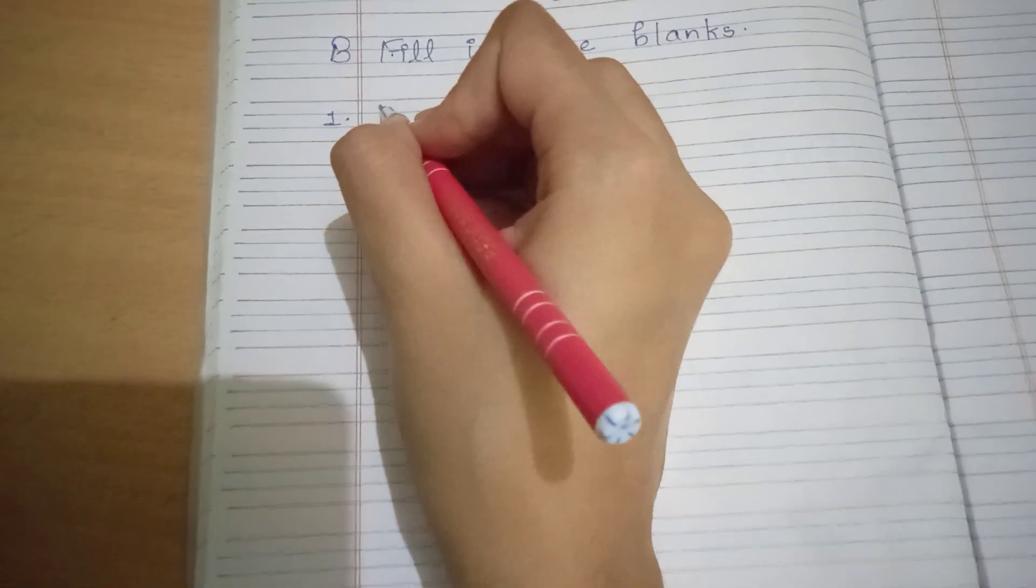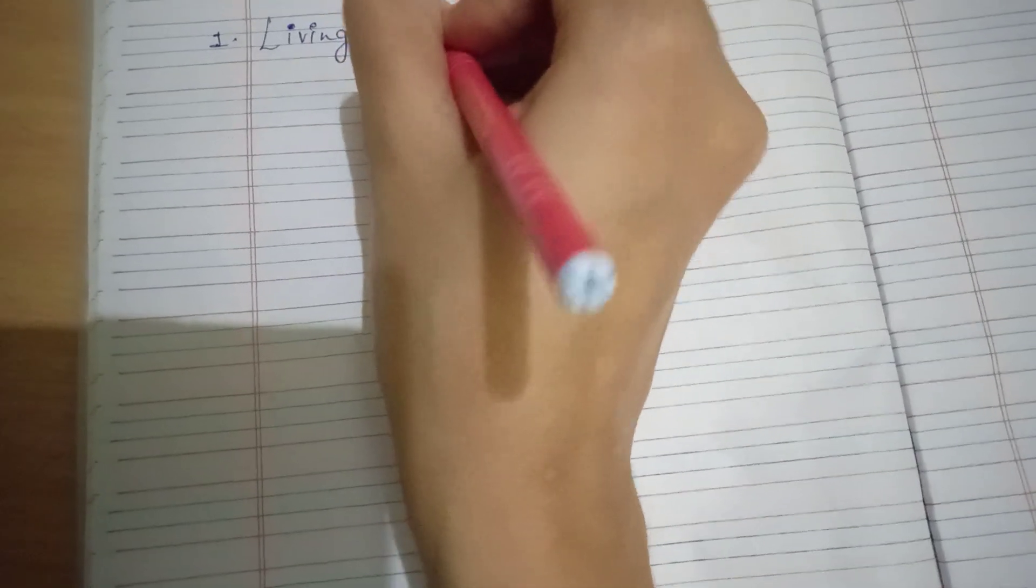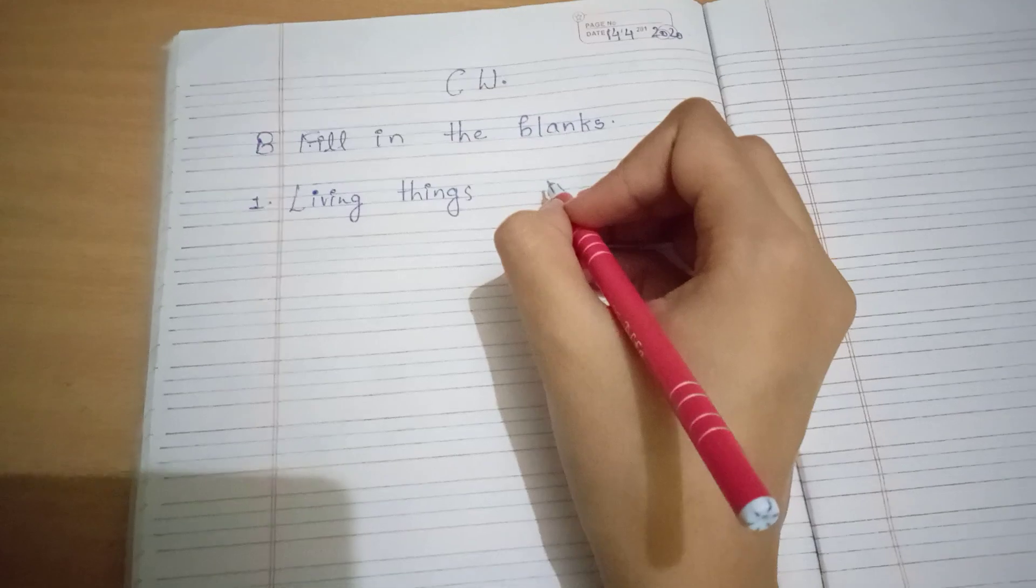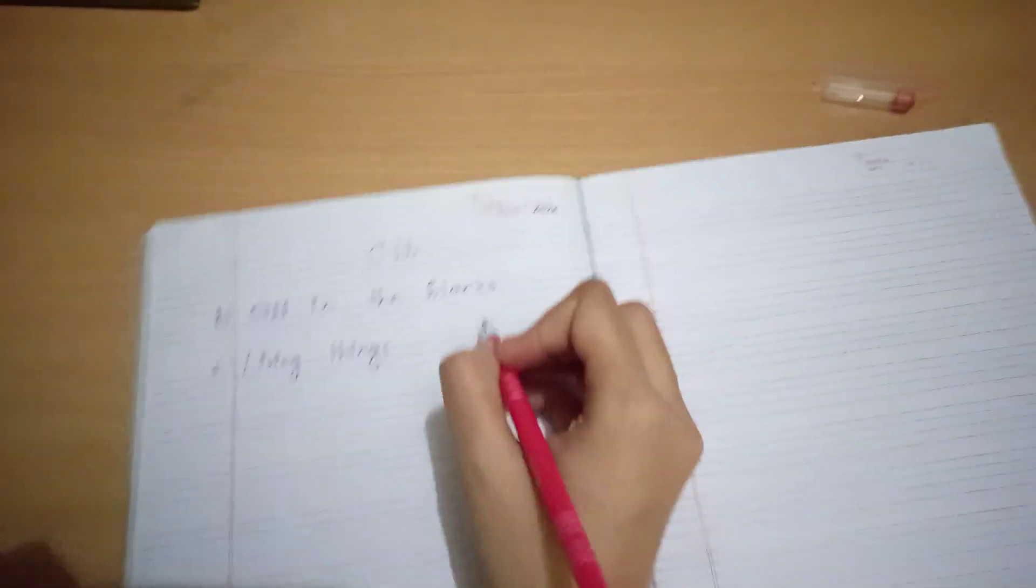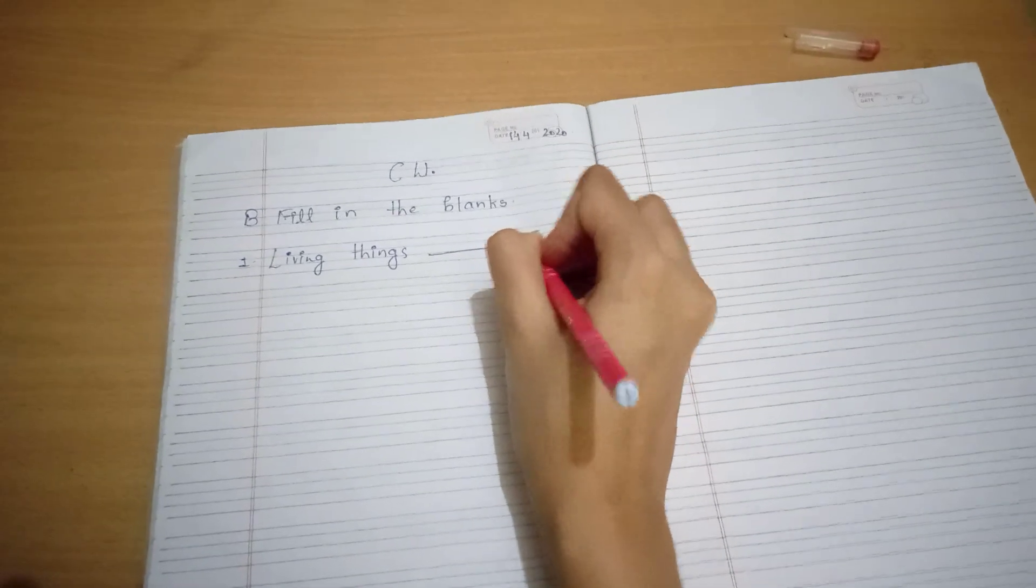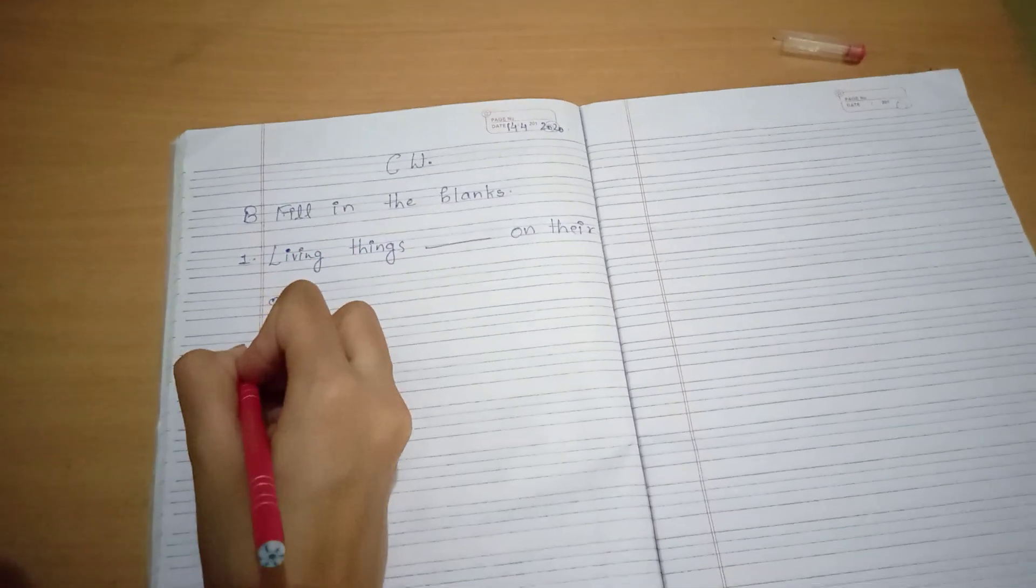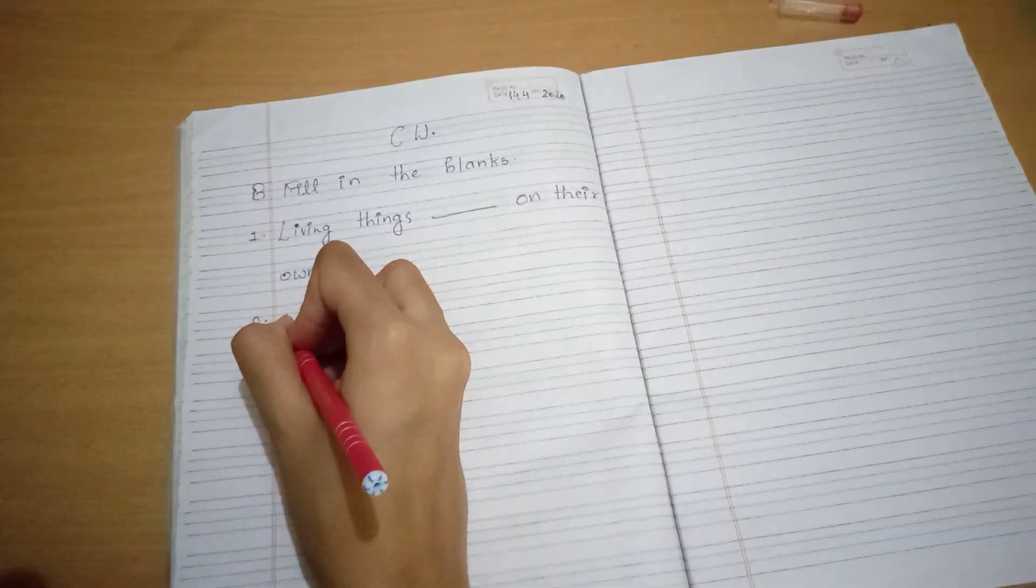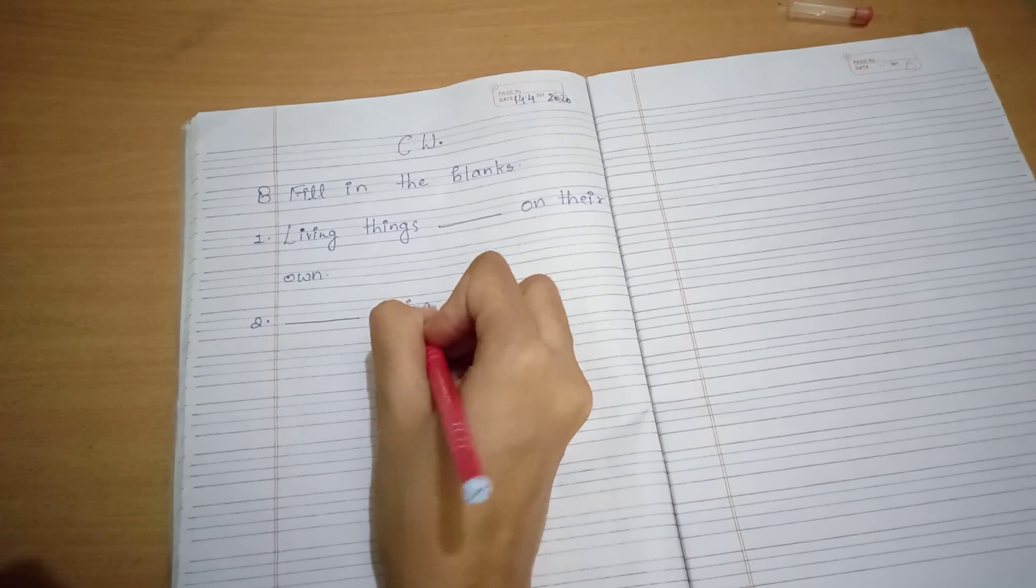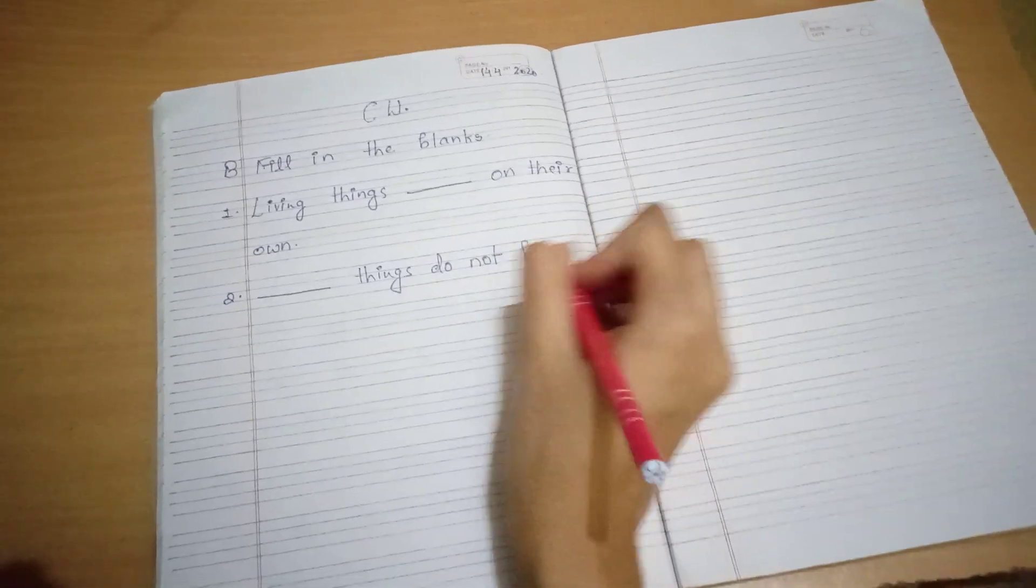Now number one is living things, living things, blank, on, their, own. Number two, dash things do not have babies.